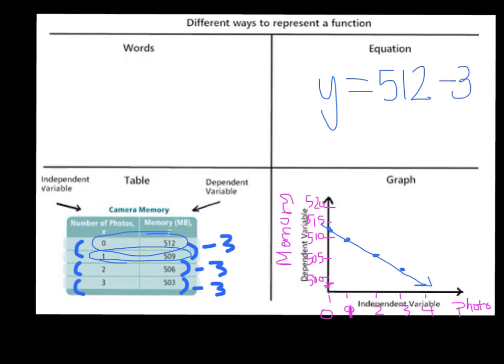And then I know that it's decreasing by 3 every time based on the number of photos. So I'm going to subtract 3x. And I can check this very simply. Here's an example for you. So if I said, let's do 2. X is 2. So I'm going to say y equals 512 minus 3 times 2. That would be y equals 512 minus 6. And if I subtract 6, that will give me 506, which is exactly what I wanted. So I know that I have my equation set up correctly.